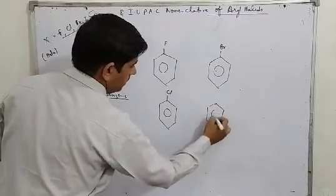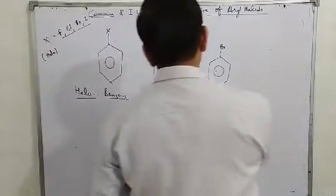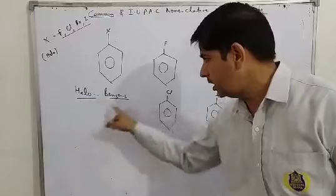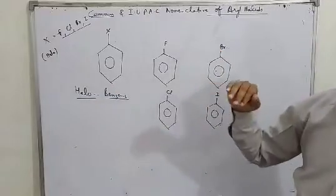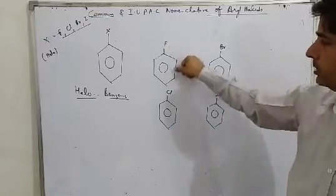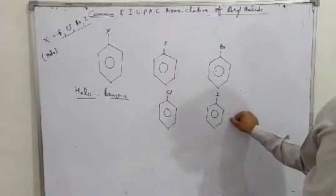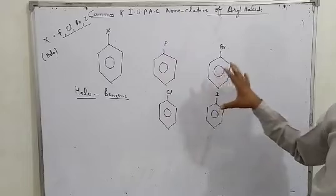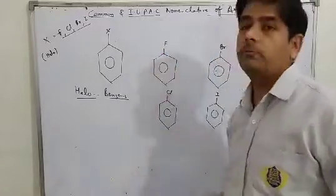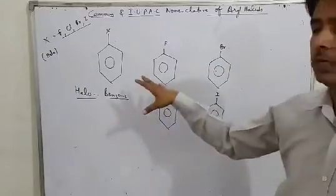Now we will see examples: fluorobenzene, bromobenzene, chlorobenzene, and iodobenzene. This is chlorobenzene, this is bromobenzene — you can call it halobenzene.